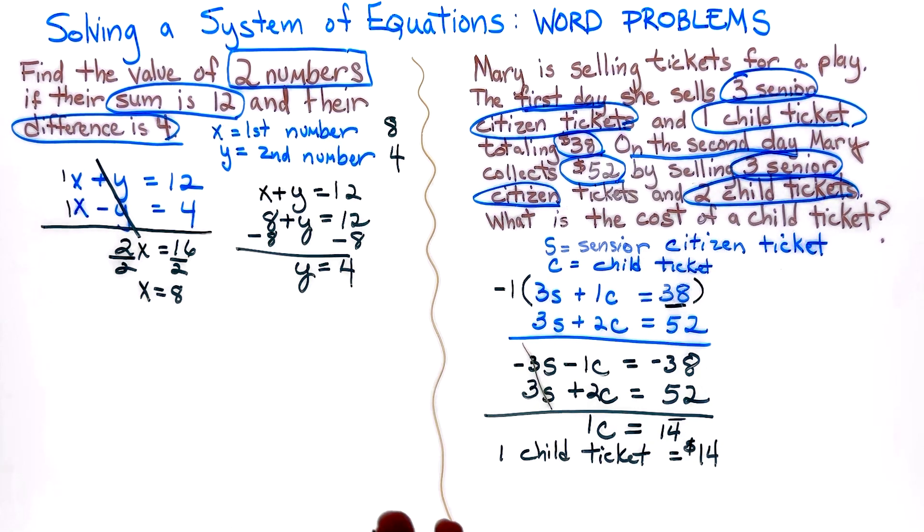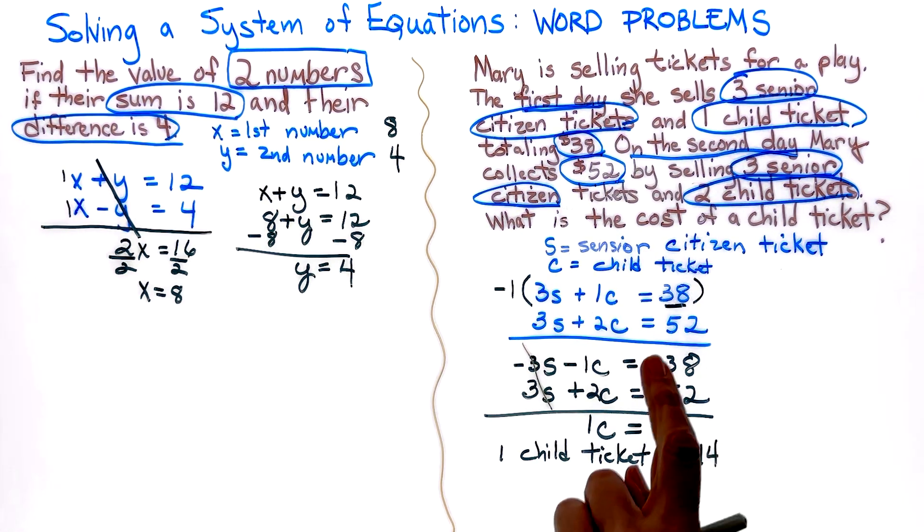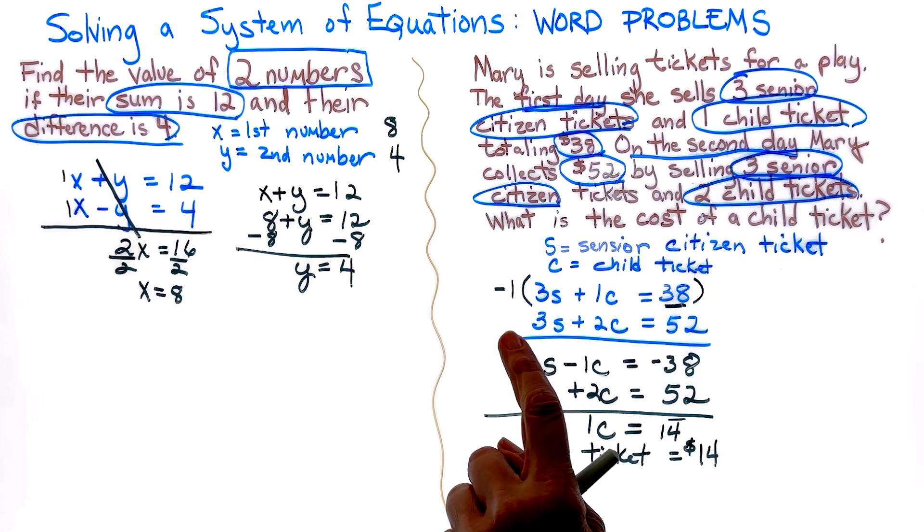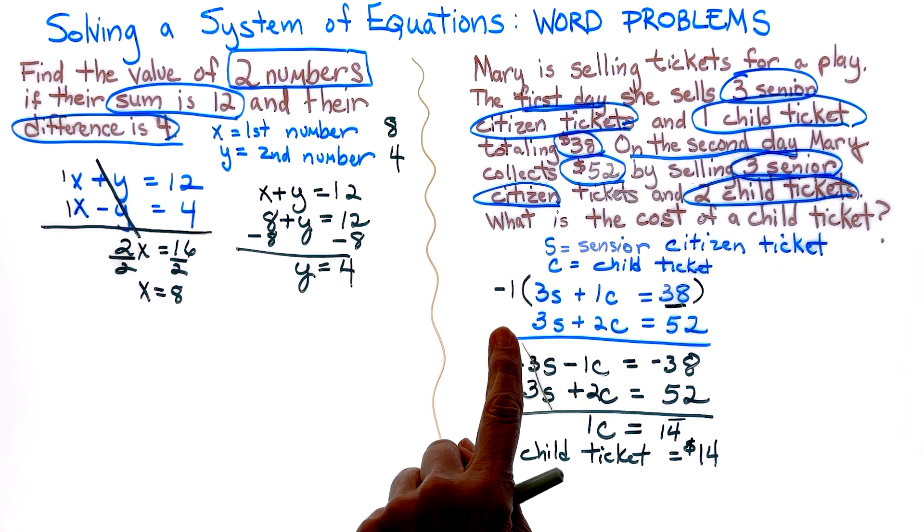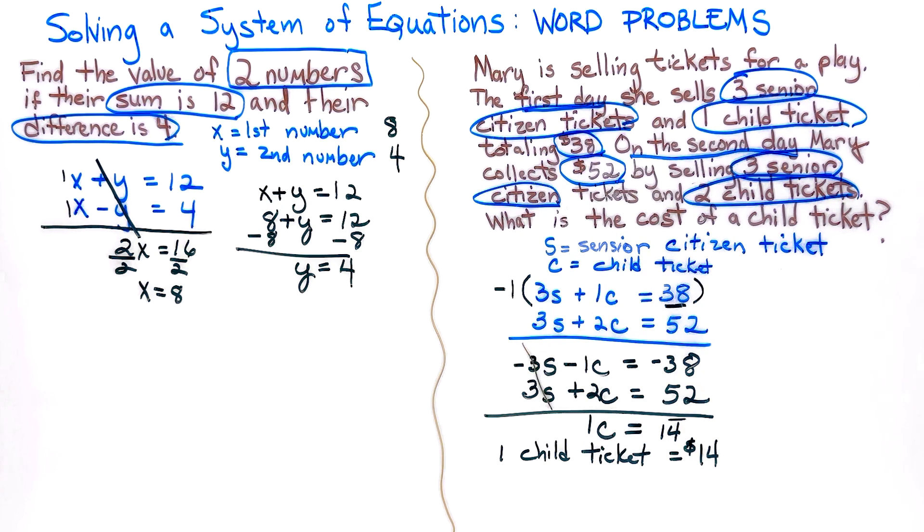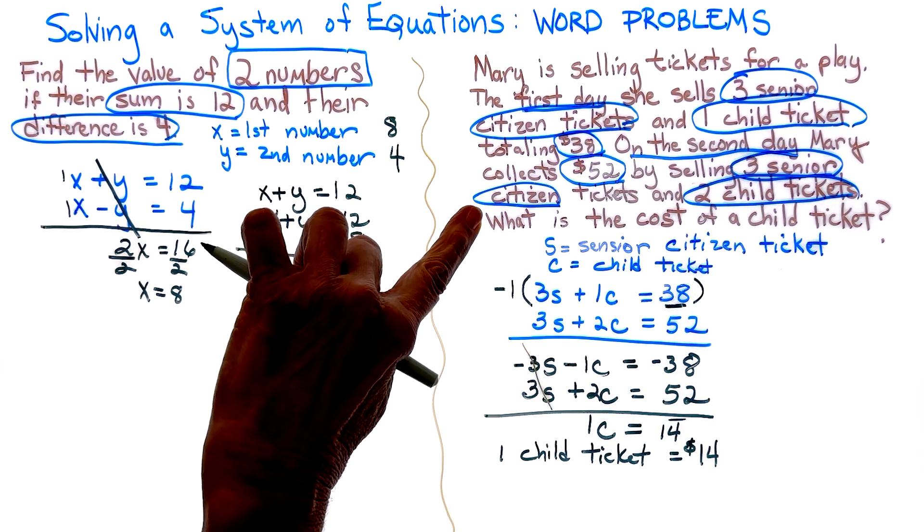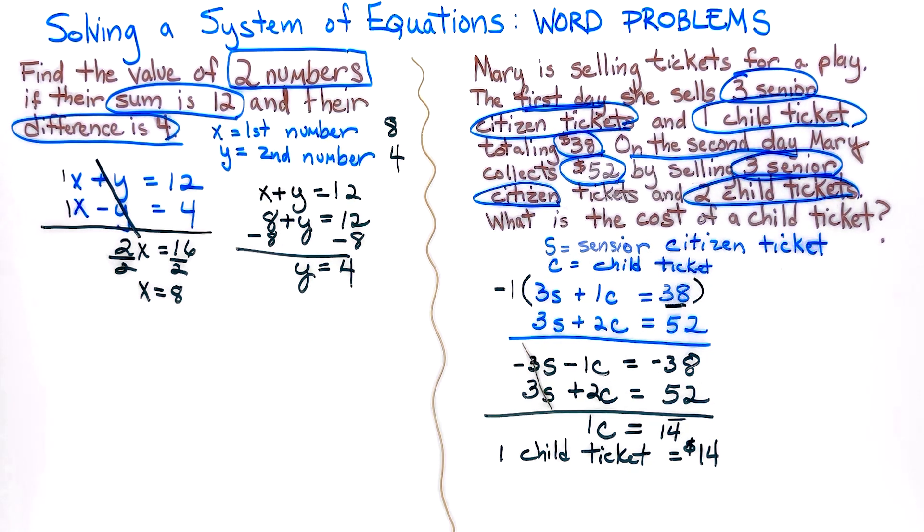If I needed to, I could substitute in that 14 into either of the original equations up here and I would be able to find my senior citizen ticket. But since they're not asking for that, I'm actually able to stop with finding the cost of one child ticket.